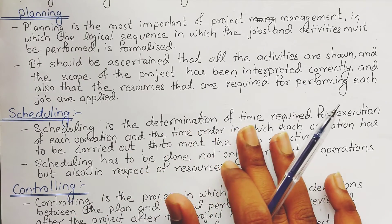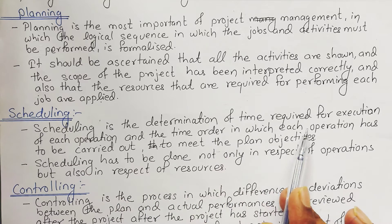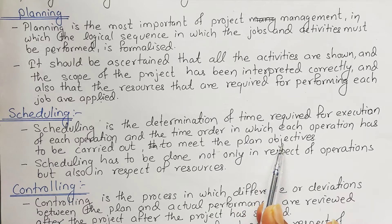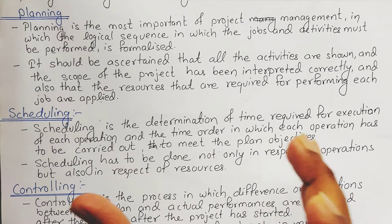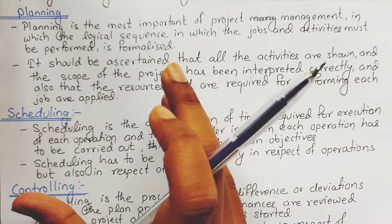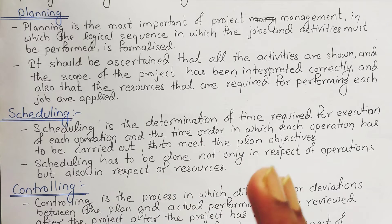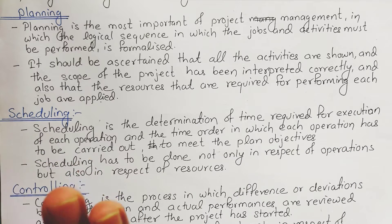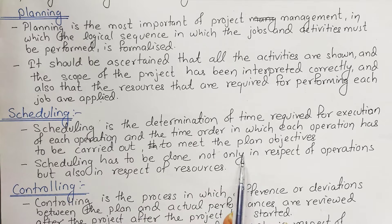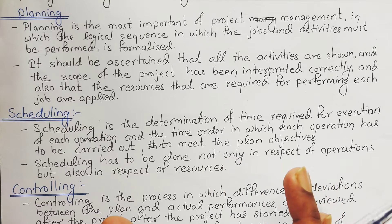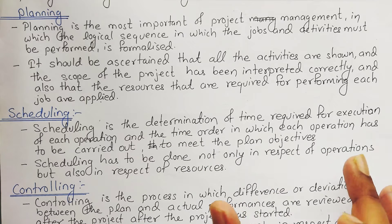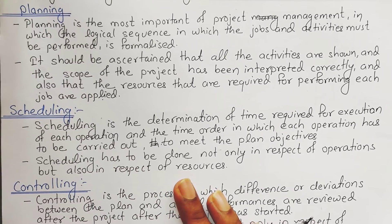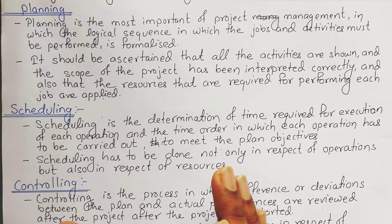Scheduling is the determination of the time required for execution of each operation and the time order in which each operation has to be carried out to meet the plan objective. It defines when each activity must start and when it should be completed. Scheduling should also be done in respect of resources, not just operations, so that there is no deficiency of resources once an activity has started.